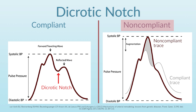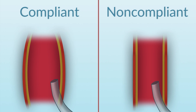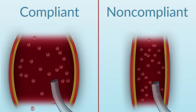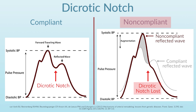The less compliant your arterial system becomes — in general, the older you become — the more rapidly the pulse wave is transmitted down your arterial system and reflected back. The faster the wave goes down and the faster it's reflected back, the earlier in the arterial line trace the dicrotic notch will appear. In young children with compliant arterial systems, you often see a very clear dicrotic notch. In elderly patients, the dicrotic notch is essentially lost because it comes back so early that it's summated on top of the arterial line trace.